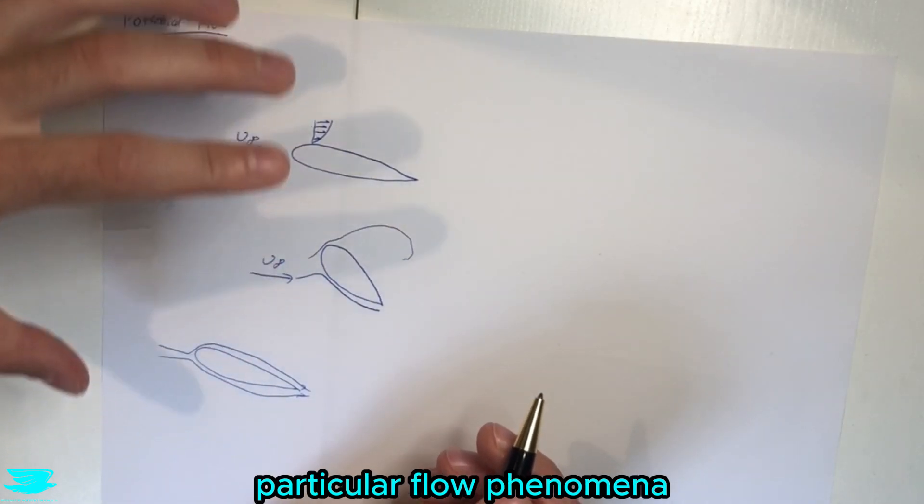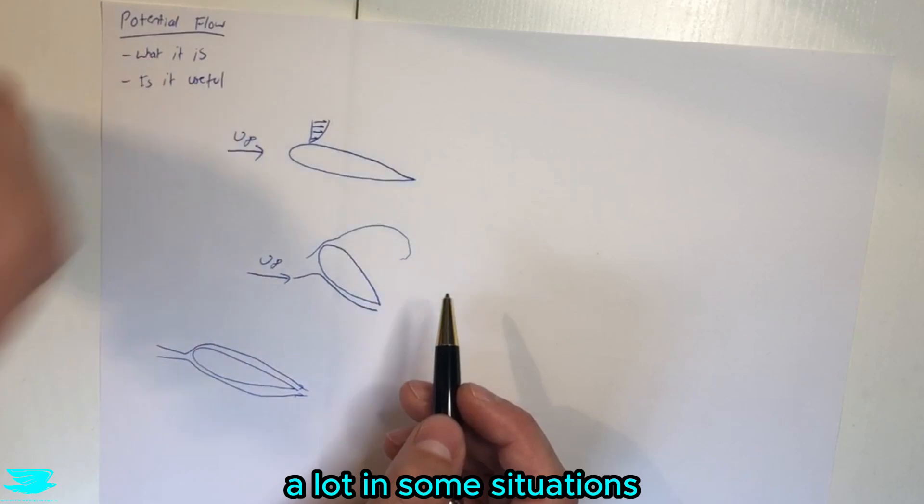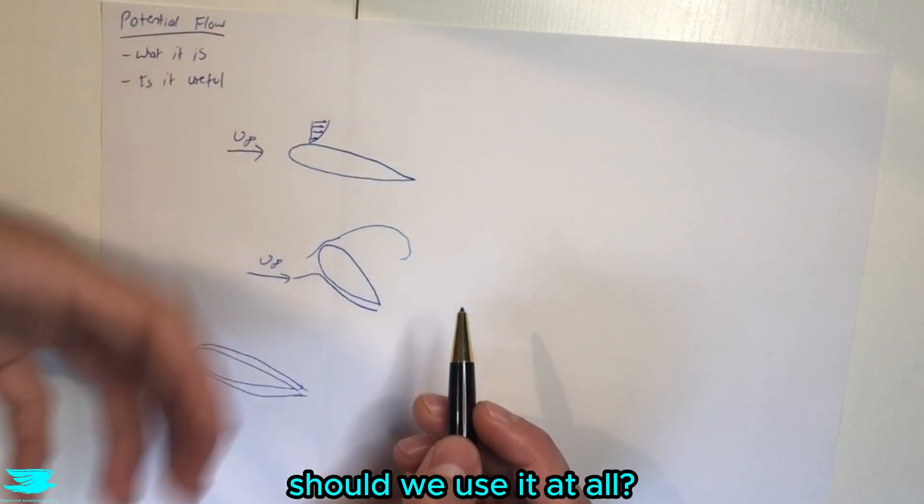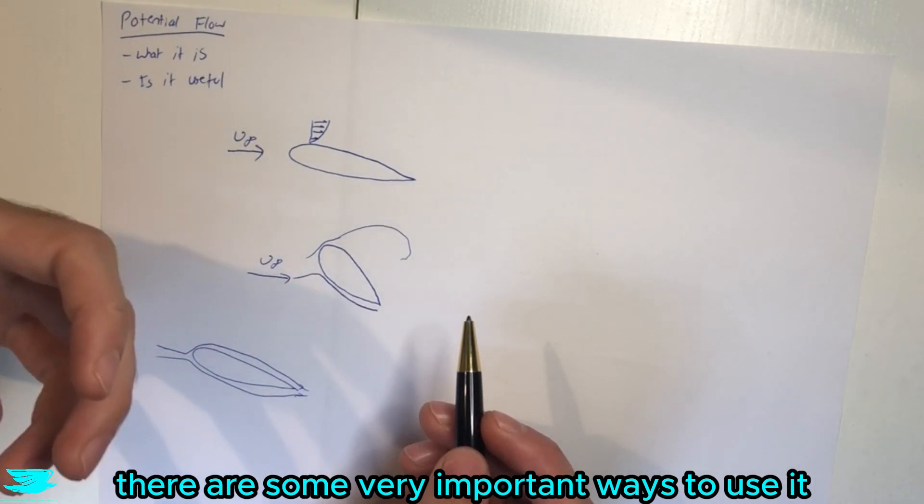So if we can't model these particular flow phenomena, which do affect the flow a lot in certain situations, is potential flow pointless? Is it? Should we use it at all? Well actually there are some very important ways to use it.